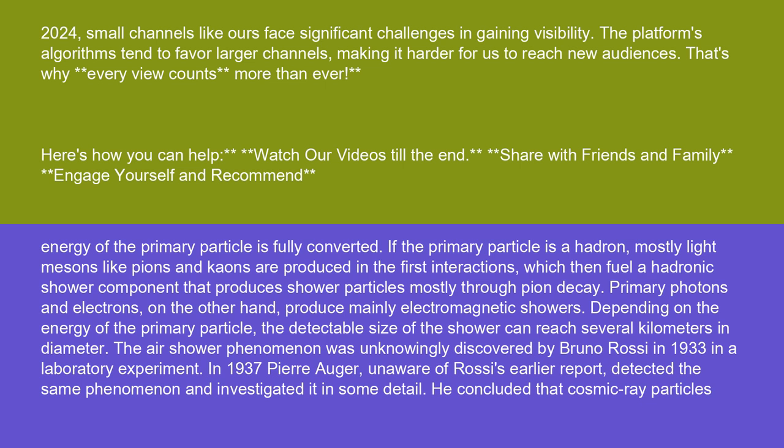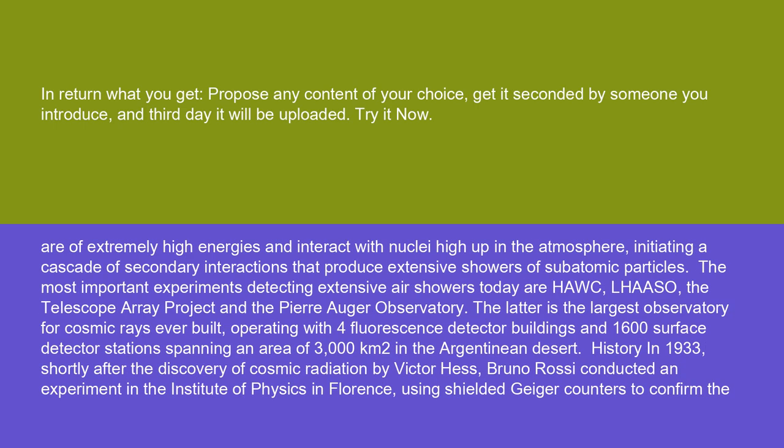The air shower phenomenon was unknowingly discovered by Bruno Rossi in 1933 in a laboratory experiment. In 1937, Pierre Auger, unaware of Rossi's earlier report, detected the same phenomenon and investigated it in some detail. He concluded that cosmic ray particles are of extremely high energies and interact with nuclei high up in the atmosphere, initiating a cascade of secondary interactions that produce extensive showers of subatomic particles.